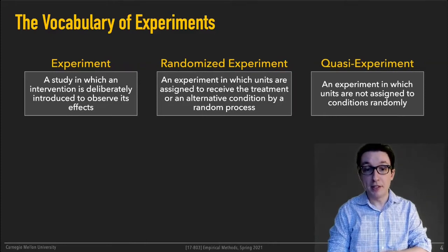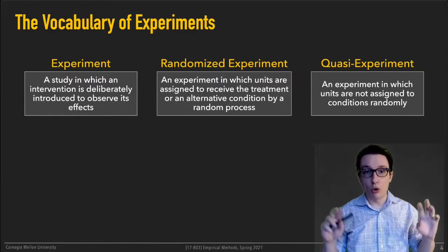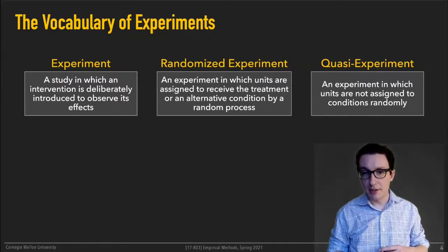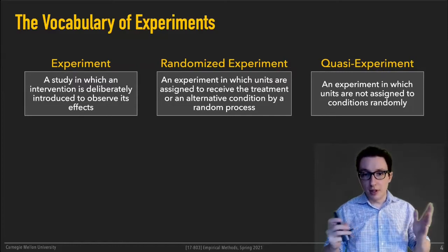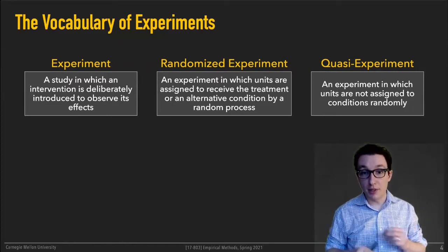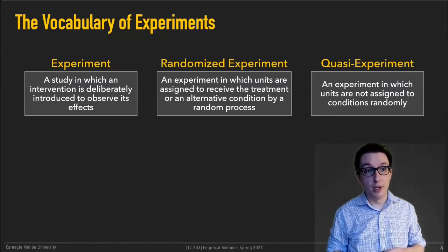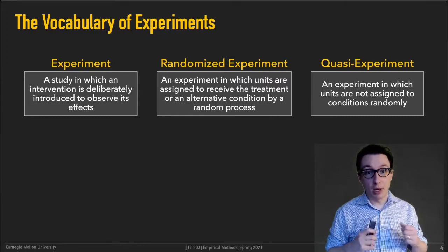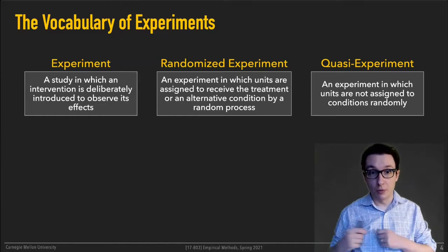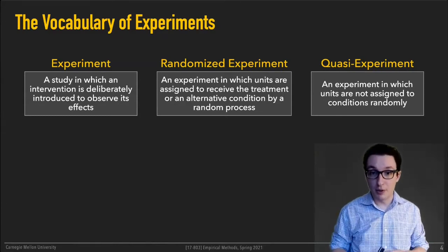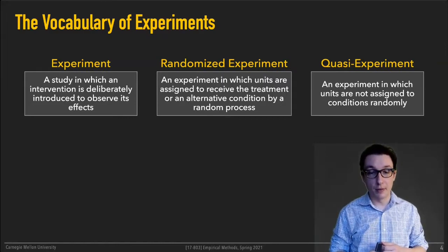A quasi-experiment is an important term you'll encounter a lot. 'Quasi' means almost — almost an experiment, not quite an experiment. A quasi-experiment is an experiment in which units are not assigned to conditions randomly. You still have different groups of participants with different conditions applied, but they've not been assigned randomly. For example, the formal methods study we talked about last time — teaching formal methods to undergrad students — that was a quasi-experiment because the researchers had not randomly assigned students to either the formal methods condition or not.